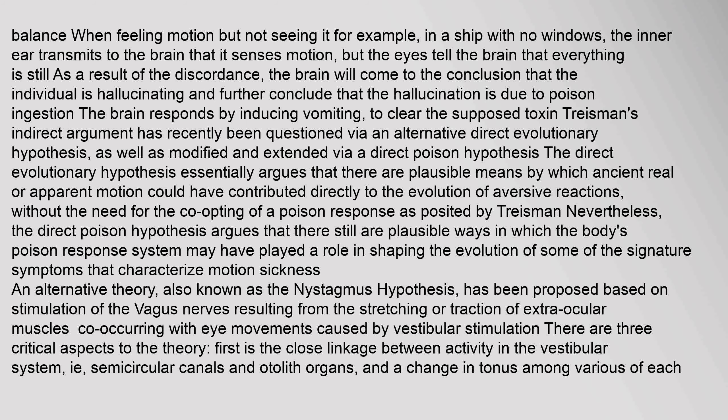Traseman's indirect argument has recently been questioned via an alternative direct evolutionary hypothesis, as well as modified and extended via a direct poison hypothesis. The direct evolutionary hypothesis argues that ancient real or apparent motion could have contributed directly to the evolution of aversive reactions, without the need for co-opting a poison response. The direct poison hypothesis argues that the body's poison response system may still have played a role in shaping the evolution of some signature symptoms that characterize motion sickness.